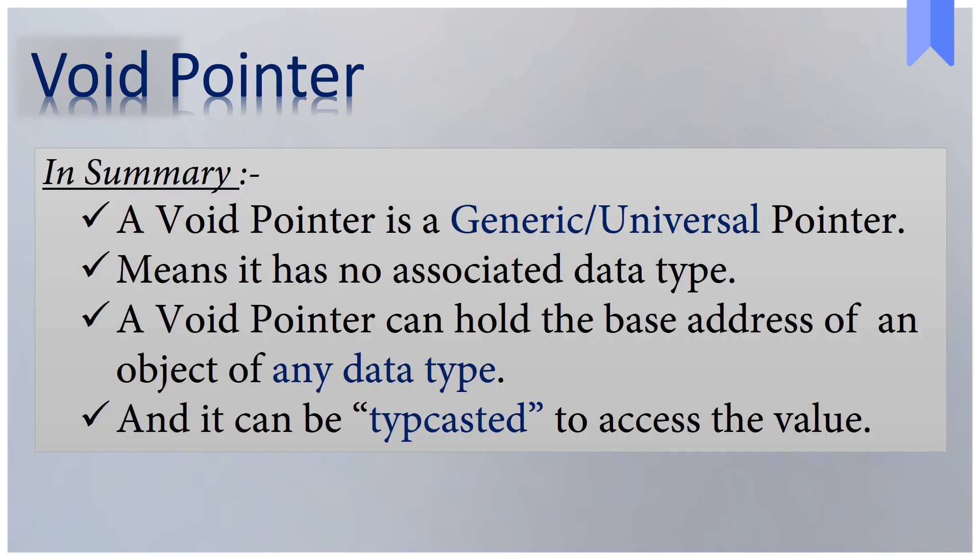So in summary, a void pointer is a generic or universal pointer. Void pointer means it has no associated data type. It can hold the base address of an object of any data type, and to access the value, it can be typecasted to another type.